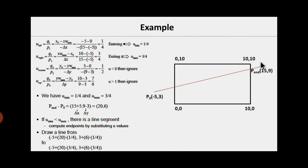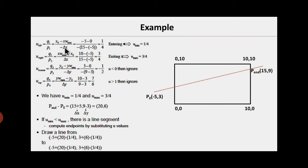Suppose we are given a clip window with dimensions (0,0), (10,0), (0,10), and (10,10). So x_wmin=0, x_wmax=10, y_wmin=0, y_wmax=10. A line is given and we have to find the portion inside the clip window. We calculate u1 (u_left) = q1/p1 = (x0 - x_wmin) / (-delta_x), which comes out to be 1/4. This value is between 0 and 1, so we consider it.